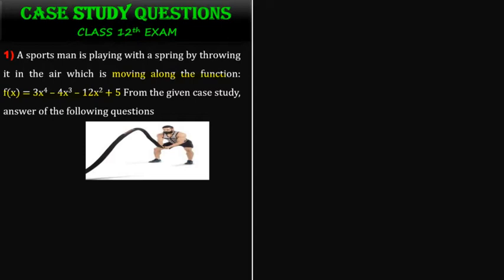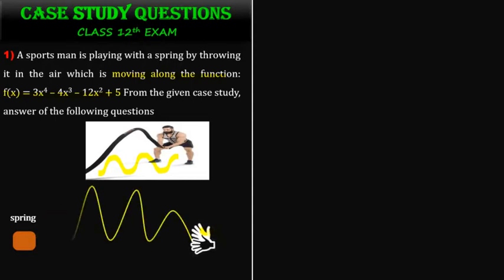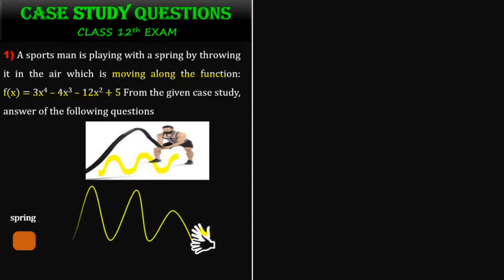What is a spring? You can roll the string — a spring goes up, down, up and down, it is rolling. The concept here involves increasing, decreasing, local maximum, and local minimum. Why? Because the spring is moving up and down.